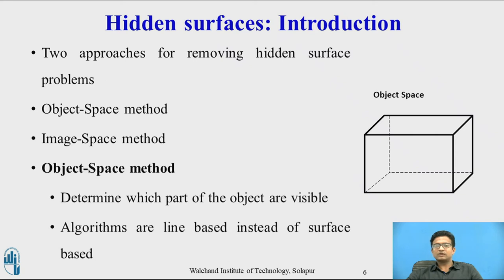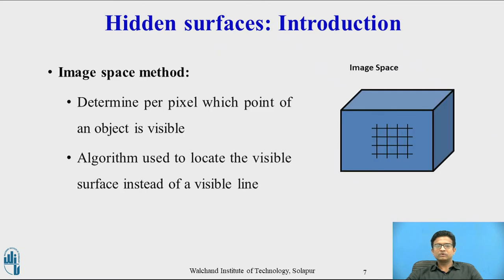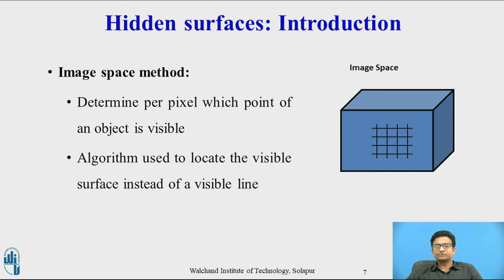In the image space method, it determines per pixel which point of an object is visible. The position of various pixels are determined, and it is used to locate visible surfaces instead of visible lines. Each point is detected for its visibility. If a point is visible, the pixel is on; otherwise the pixel is off. This algorithm is used to locate visible surfaces instead of visible lines.